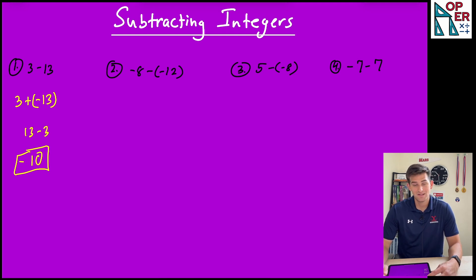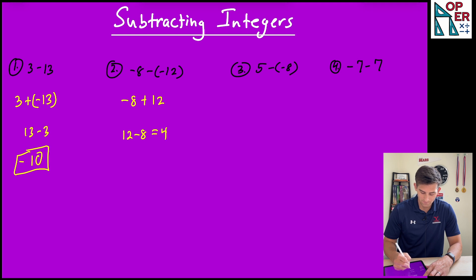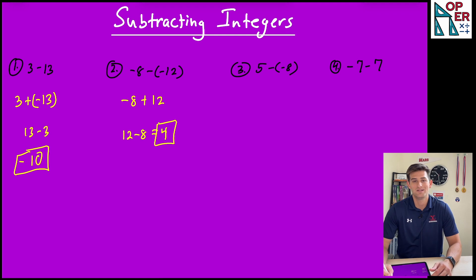Number two: negative 8 minus negative 12. We can rewrite it as negative 8 plus the opposite of negative 12, so negative 8 plus 12. Once again, we have different signs and we're adding, so we're going to subtract 12 minus 8, and that would be 4. Now we look back - which number, negative 8 or 12, had the higher absolute value? That would be 12, which is positive, so our answer is positive 4.